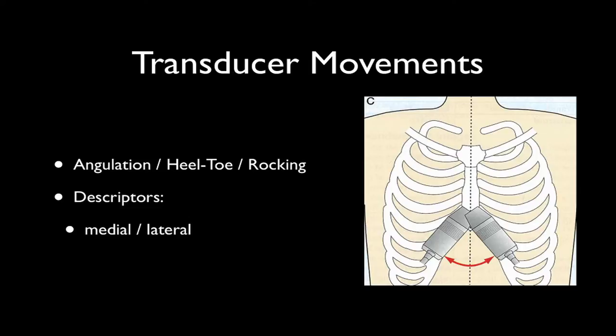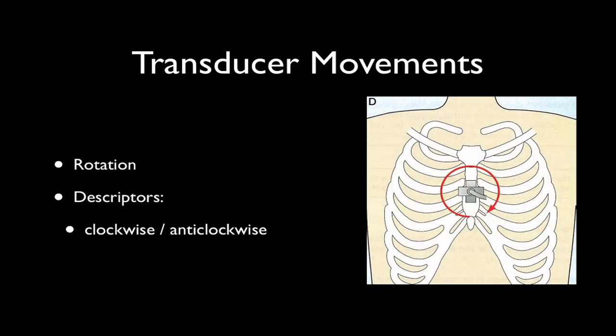Angulation, also known as heel-toe or rocking, refers to movement of the probe either towards the probe marker side or away from the probe marker side. It is a change of angle, but of the narrow side of the probe rather than the broad side. Lastly, we can rotate the probe along its long axis without changing any angles or positions, and this is described as being clockwise or anticlockwise.